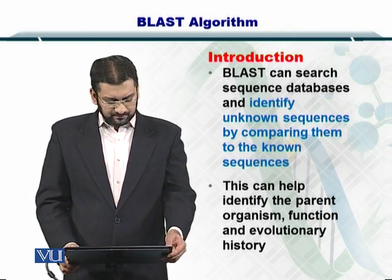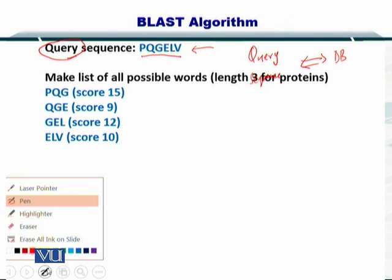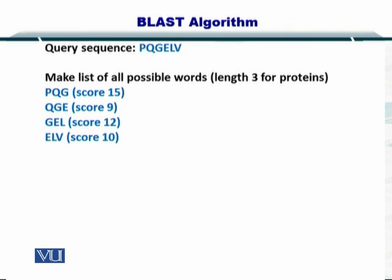To help you understand how BLAST works, let's take a look at this example. Here you have a query sequence — this is the first thing that you need to have while performing BLAST. On one side you have the query sequence, while on the other side you have a database. As you can see here, your query sequence is an amino acid sequence — in this case, a very small peptide. The first step in the BLAST algorithm is to make a list of all possible words.